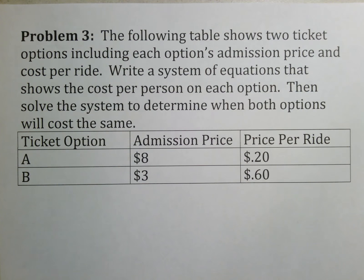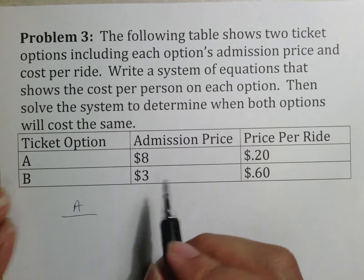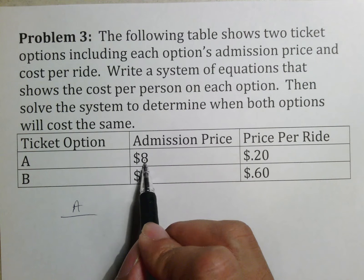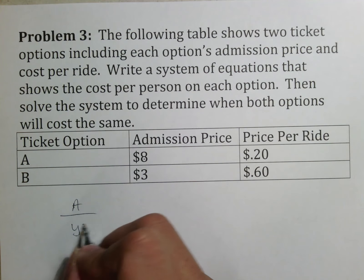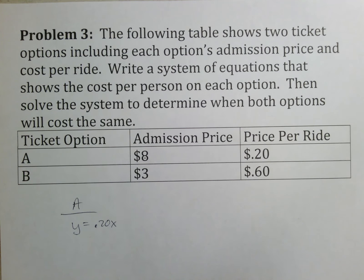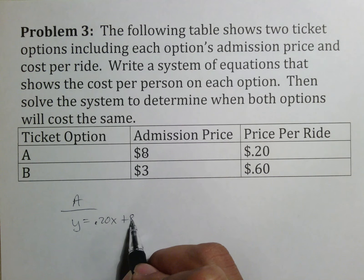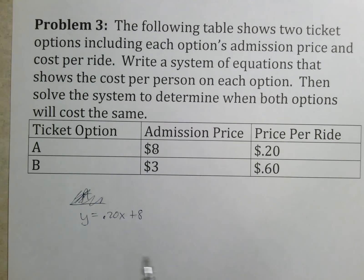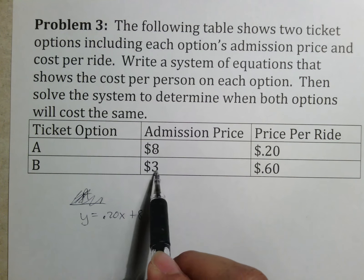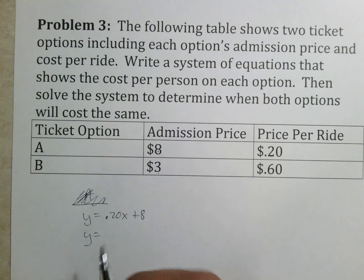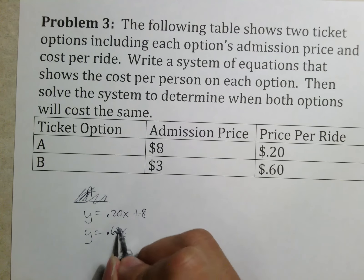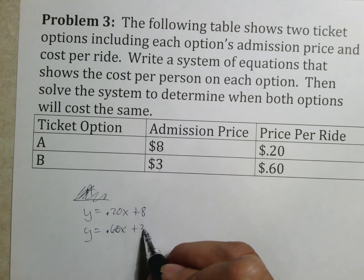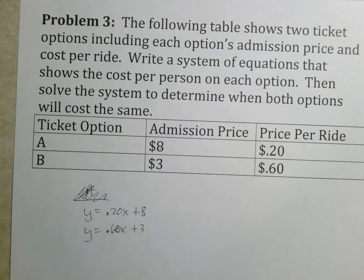Third question is a word problem. You can probably assume that we're going to see word problems on a test. The following table shows two ticket options including each one's admission price and cost per ride. They want a system of equations that shows the cost per person on each option and then to solve it. Option A is going to be admission price of $8, paid once. The price per ride is 20 cents per ride. The equation for that would be 0.20x plus 8. Option B costs $3 to get in, 60 cents per ride, so option B would be 0.60x plus 3.